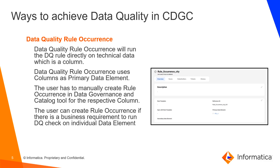Data quality rule occurrence runs the DQ rule directly on technical data, which is a column. It uses the primary data element as a column. The user has to manually create a rule occurrence in the data governance and catalog tool for the respective column. A user can use data quality rule occurrence if the business requirement is to check a data quality rule on individual data elements.